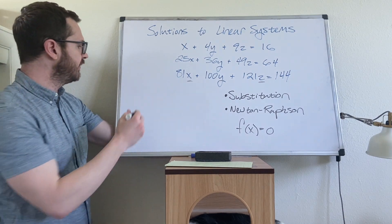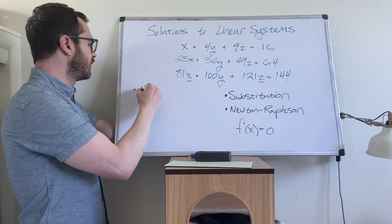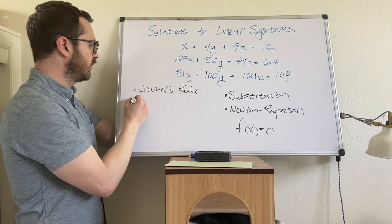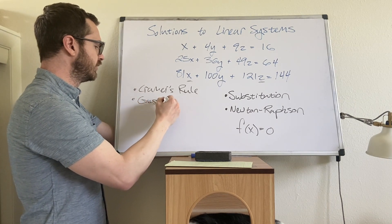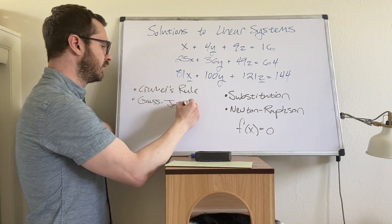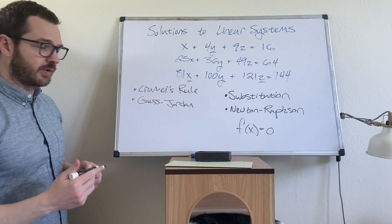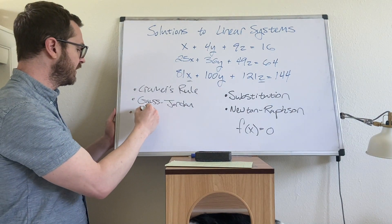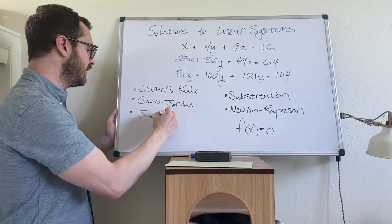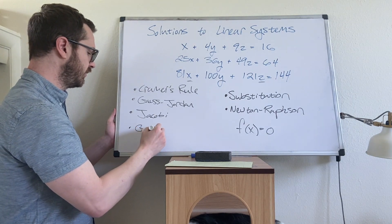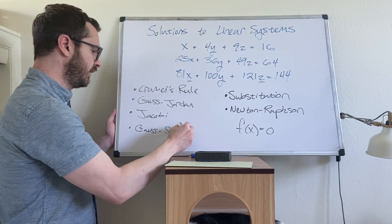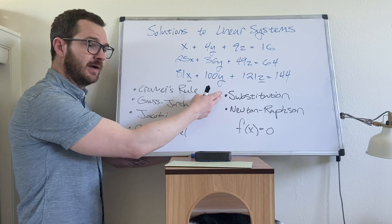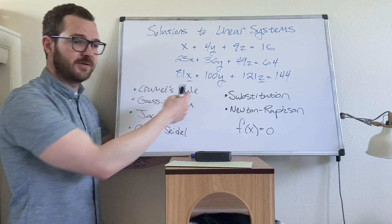In today's video we're going to talk about two methods: Cramer's rule and Gauss-Jordan. There's a second video where we'll do two more methods — the Jacobi and the Gauss-Seidel. When we are done, you will have five methods, and then a terrible masochistic manual method as well.